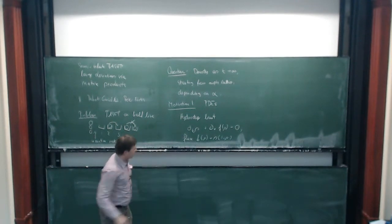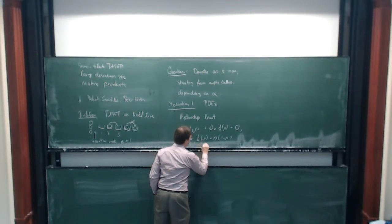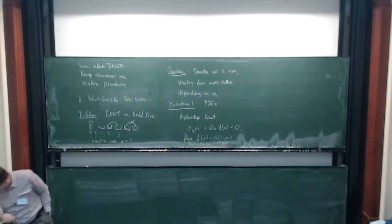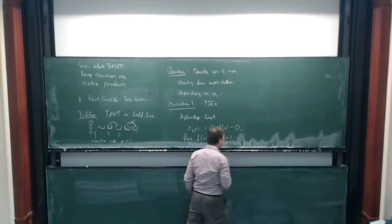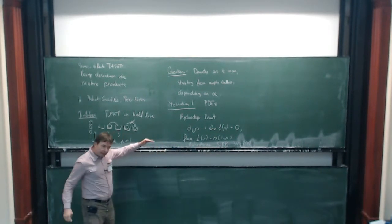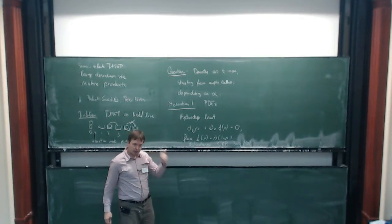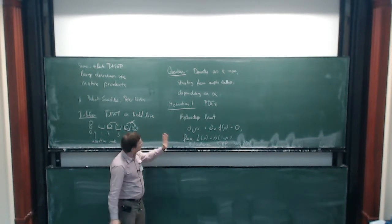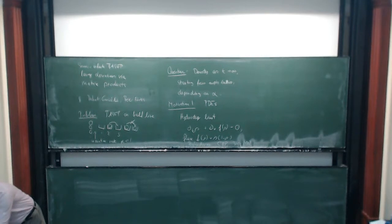This has been studied in a number of settings — for example, work by Bahadoran in Communications in Mathematical Physics, around 2012. The difficulty here is that we live on a half line; this is a conservation law, so there can be shocks and rarefaction fans. That's an essentially well-understood theory. But there is an additional question: how do we prescribe boundary data for conservation laws?